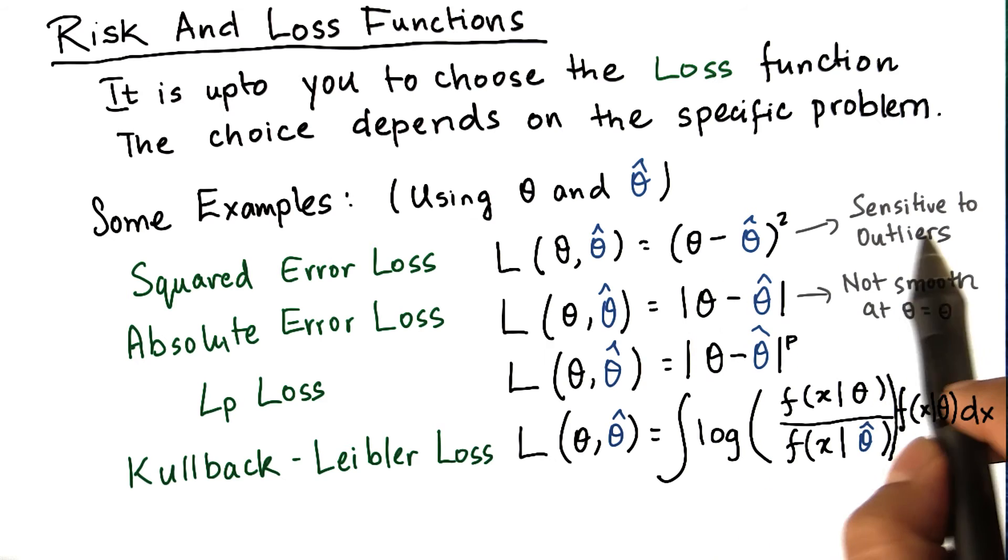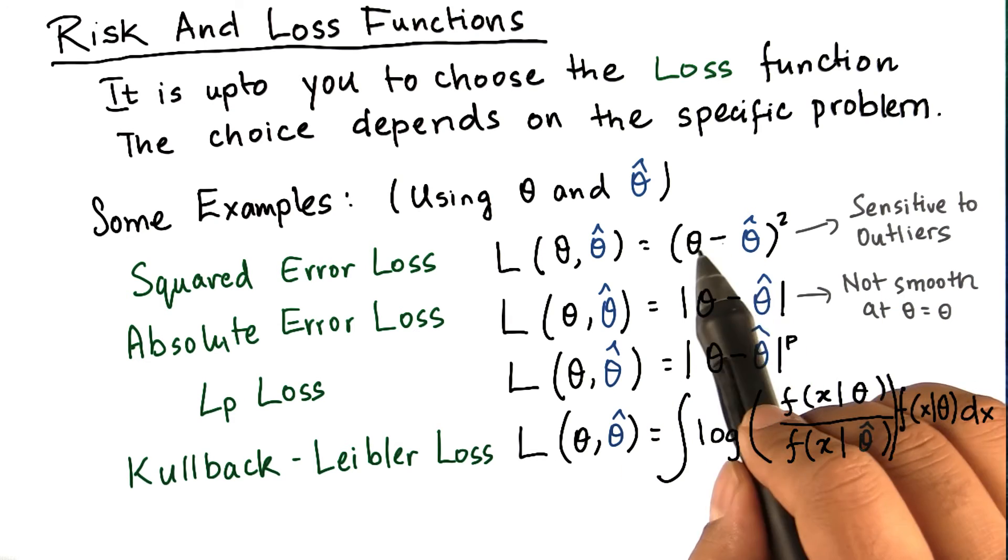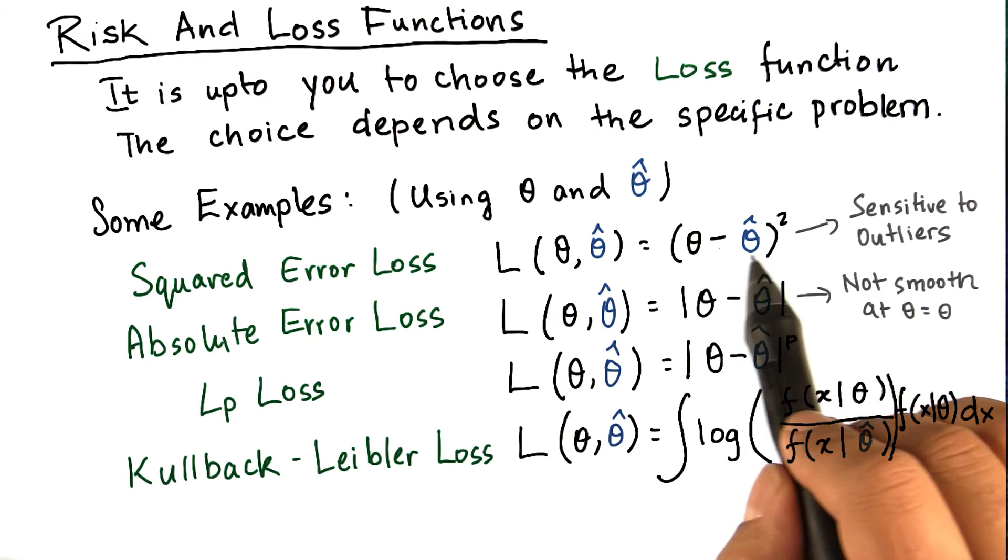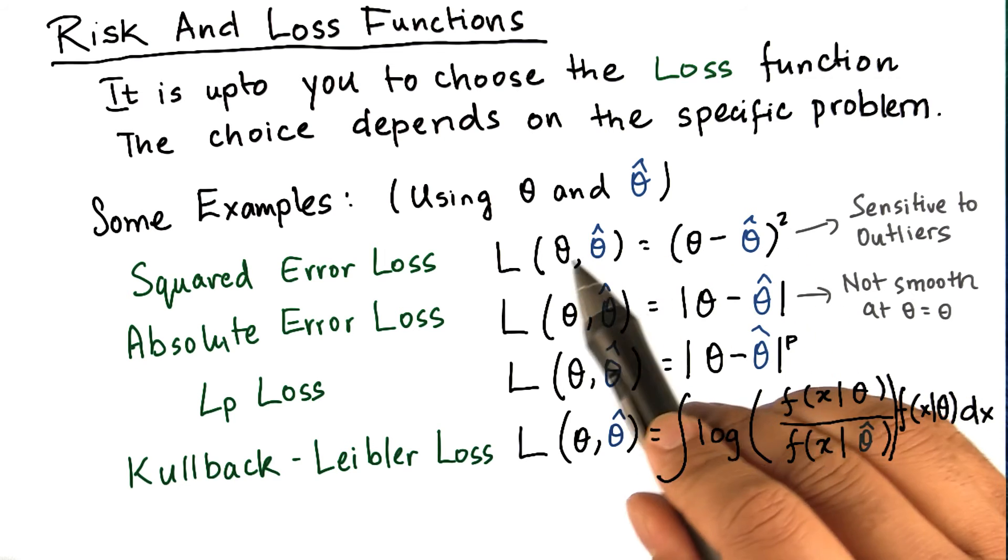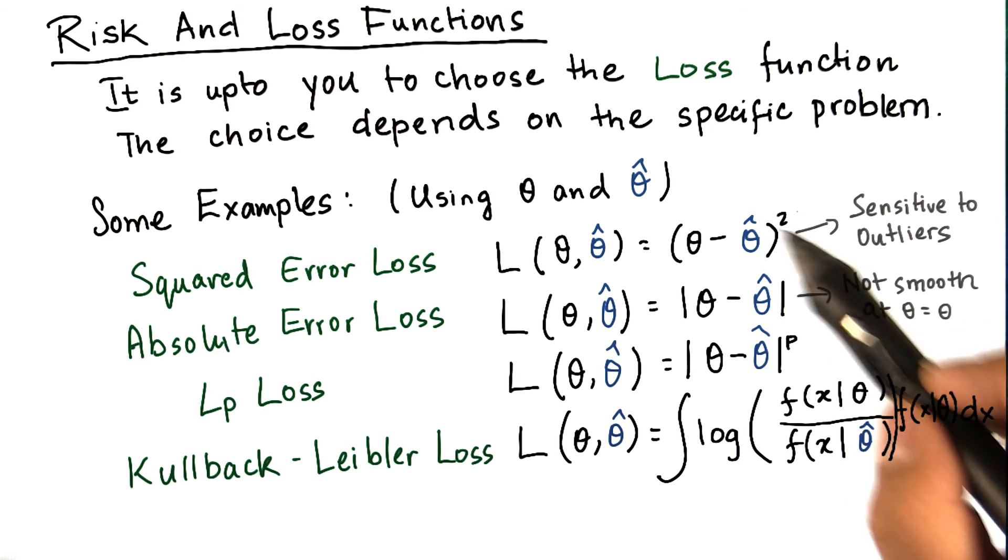The square error loss is sensitive to outliers. For values of theta hat that are far from the values of theta, it contributes a large quantity to L. Also notice, this is always a positive quantity, given it's a square of a difference.